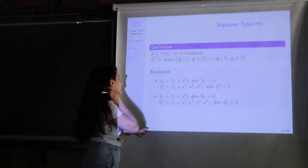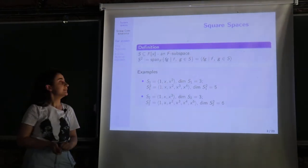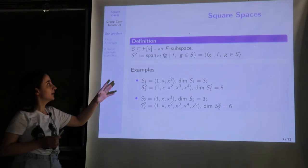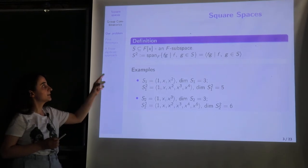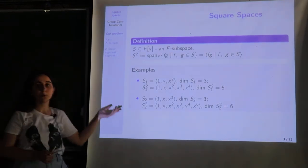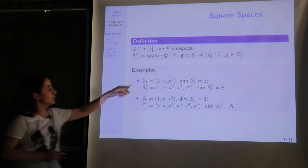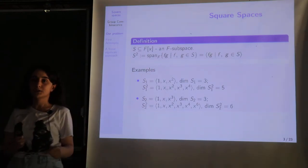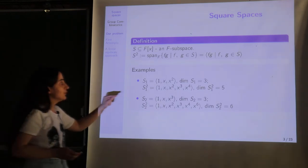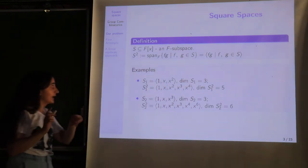To give the definition of square spaces, we take S, a vector subspace of F[x], and we define S² to be all the linear combinations of the products f and g, where f and g belong to our set S. We also use angle bracket notation for the span.